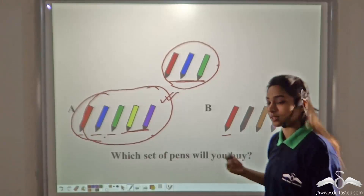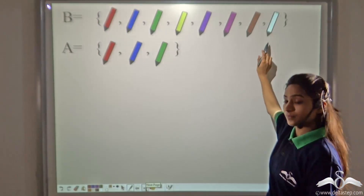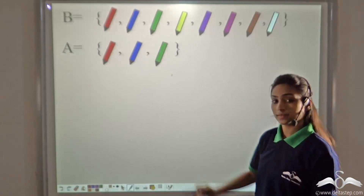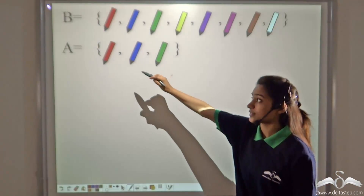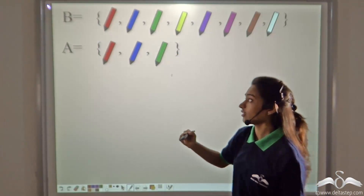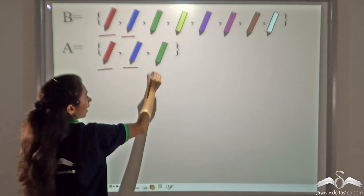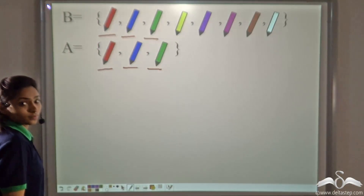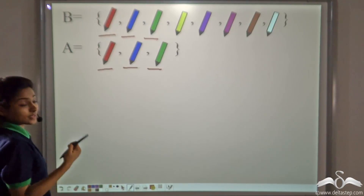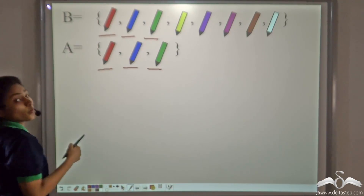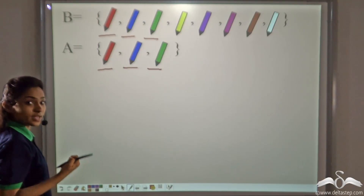Let's clear this with another example. Let there be a set B with these pens and a set A with these pens. Now check if every element of A is present in B — that is, every pen present in A is present in B. A red pen is present in B, a blue pen is present in B, and a green pen is also present in B. So every element in set A belongs to set B, and we say that A is a subset of B. Whenever every element of set A is present in set B, we say that A is the subset of B.